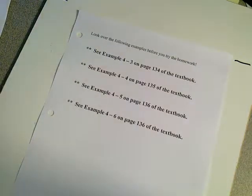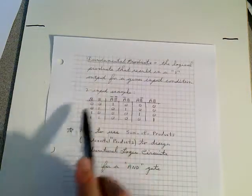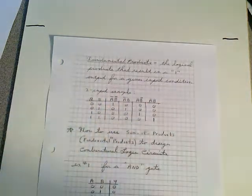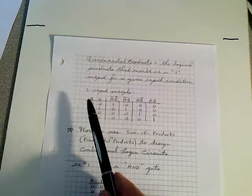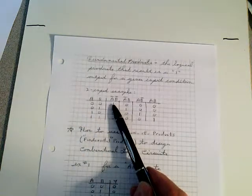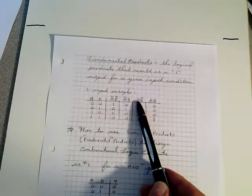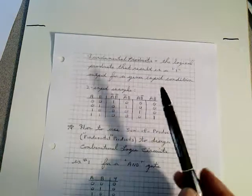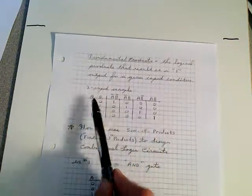Okay, that's going to take us over to page number 88. Again, we're going to mention here fundamental products here. Fundamental products is the logical products that result in a one output for a given input condition. I already led you into this earlier when I talked about fundamental products. Here's a two-input example. Notice we have two inputs, so we have four possibilities, 0, 0 through 1, 1. And the fundamental product for A-bar, B-bar is right here. The fundamental product for A-bar, B is here. The fundamental product for A-B-bar is here. And the fundamental product for both of them being high, A-B, is down here. These are called fundamental products for these input combinations.